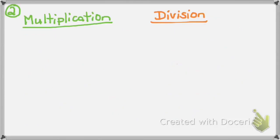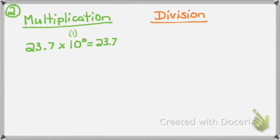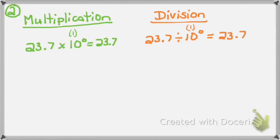In example number 2, we'll compare multiplication and division with base 10 numbers and exponents. For the multiplication problem 23 and 7 tenths times 10 to the 0 power — 10 to the 0 power is a 1 with no zeros, so that equals 1, and anything times 1 is itself, so the answer stays at 23 and 7 tenths. For the division problem 23 and 7 tenths divided by 10 to the 0 power — again, that's equivalent to 1, and anything divided by 1 is itself, so that stays at 23 and 7 tenths.